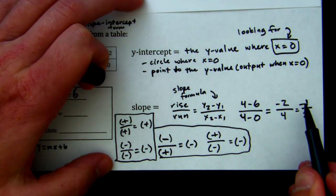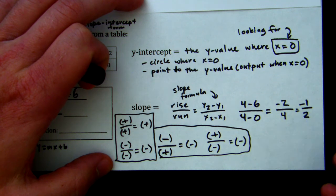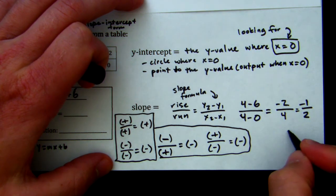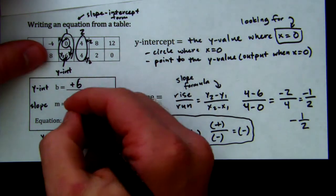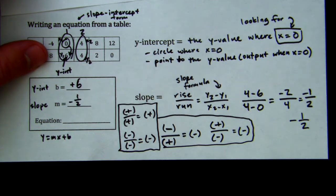Okay, so here we have a negative over a positive. So what that means is my slope is going to be negative. And remember, we simplify. So my m is negative 1 over 2.